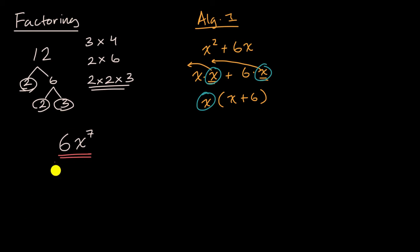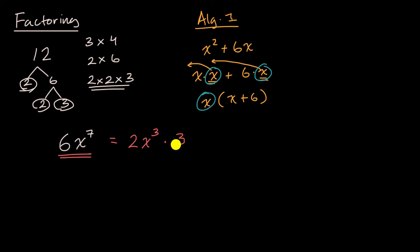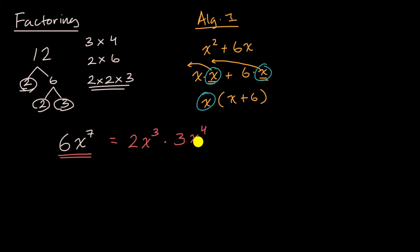Well, I could rewrite this as two x to the third times something. What do I have to multiply two by to get to six? I multiply by three. And what do I multiply x to the third by to get x to the seventh? I multiply by x to the fourth. So this equals two x to the third times three x to the fourth. Notice: two times three is six, and x to the third times x to the fourth is x to the seventh — we add exponents when multiplying things with the same base.